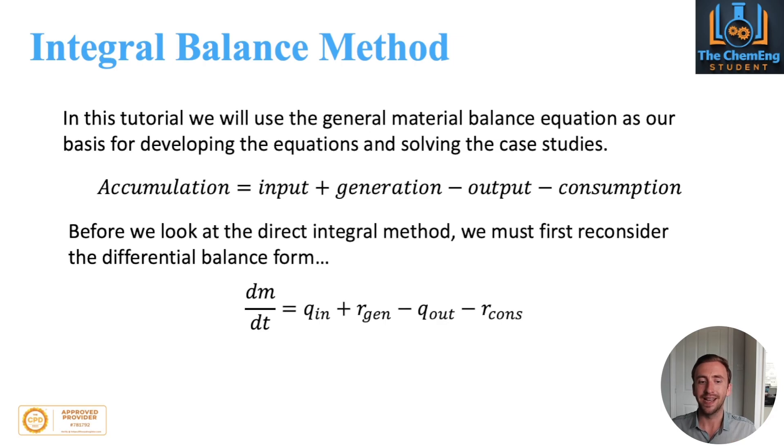Now before we look at the direct integral method, we need to first reconsider the differential balance or the differential form that we've seen in the previous video that discusses transient processes. So when we looked at the differential balance, we had dm by dt is equal to q in plus r gen minus q out minus r cons. That's just the abbreviations for these terms here with appropriate nomenclature.